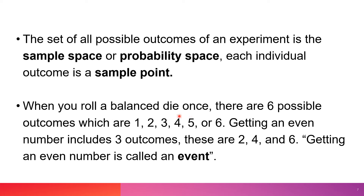When you roll a balanced die once, there are six possible outcomes: one, two, three, four, five, or six. Getting an even number includes three outcomes: two, four, and six. So, getting an even number is called an event.